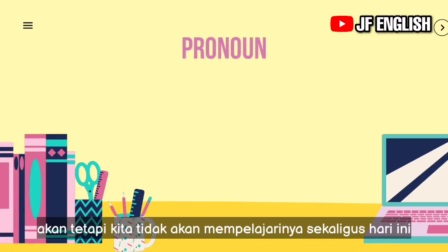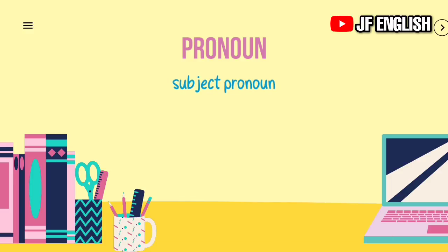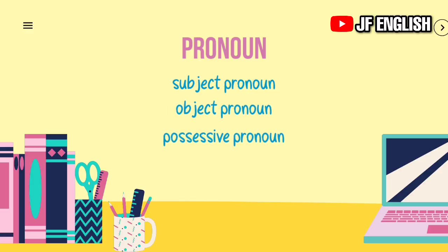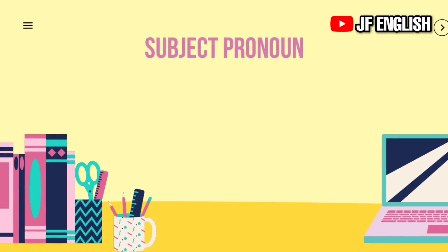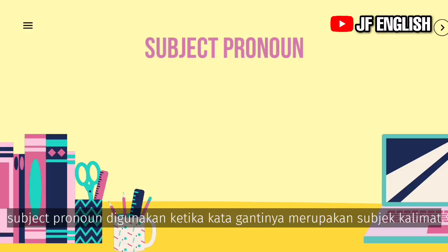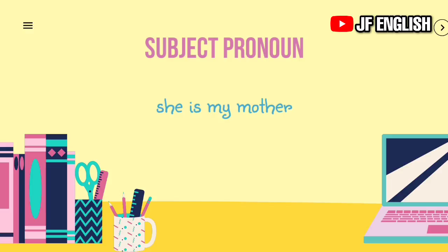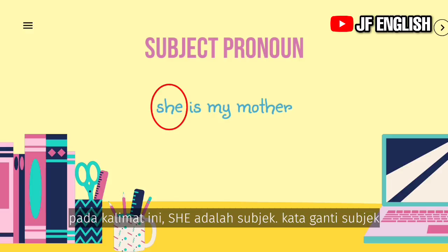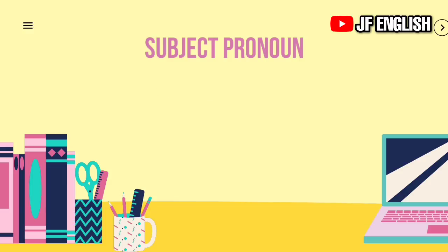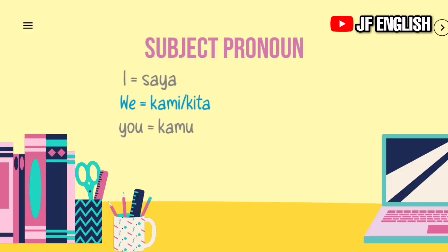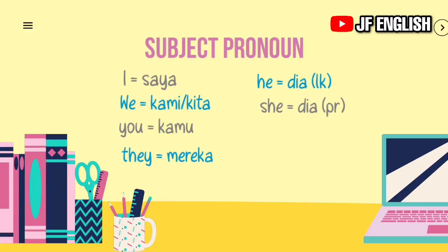For today we'll just learn subject pronoun, object pronoun, and possessive pronoun. Subject pronouns are used when the pronoun is the subject of the sentence — its position is at the beginning of a sentence. For example: 'She is my mother,' meaning 'dia adalah ibuku.' Subject pronouns are: I (saya), we (kami/kita), you (kamu), they (mereka), he (dia — laki-laki), she (dia — perempuan), it (untuk hewan atau benda).